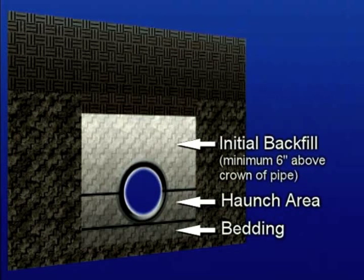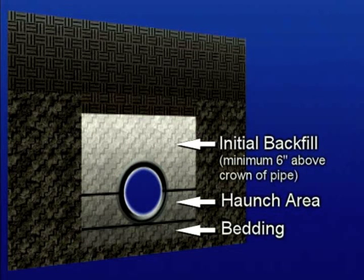The initial backfill area extends to a minimum of 6 inches above the crown of the pipe. Only approved backfill material should be used in the bedding, haunch, and initial backfill areas of the trench.